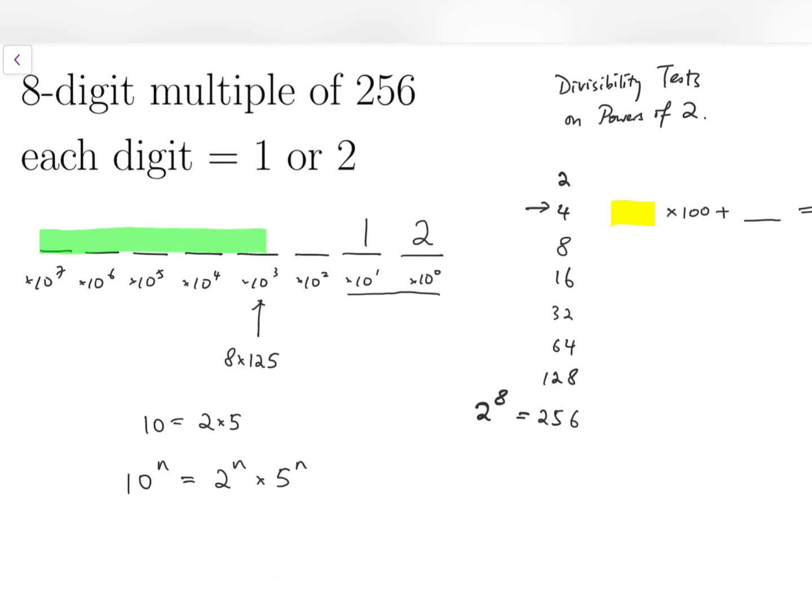I can use the green block times a thousand plus the last three digits. So it remains to find whether the hundreds digit is 1 or 2, so that the last three digits itself, as a three-digit number, is a multiple of 8. So because 112 is a multiple of 8, while 212 is not, we have the third digit to be 1 as well.